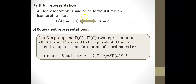Now I will introduce the notion of a faithful representation. A representation is said to be faithful if to each element corresponds a unique matrix — meaning if two elements are different, there are two different matrices corresponding to each. For example, the previous representation of the equilateral triangle in R² is a faithful representation because to each element corresponds a different matrix.